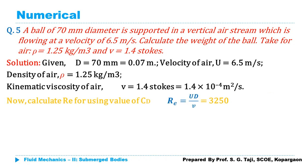Before proceeding, the first and foremost thing is to calculate the Reynolds number. Here, diameter, velocity, and viscosity are all given, so we can easily calculate Re = ρVd/μ, or equivalently Vd/ν. Putting in all the values, Reynolds number comes out as 3250, which lies between 1000 and 10⁵.